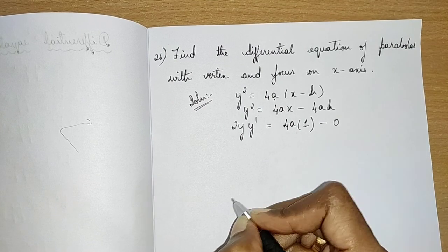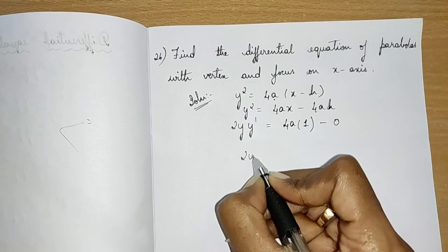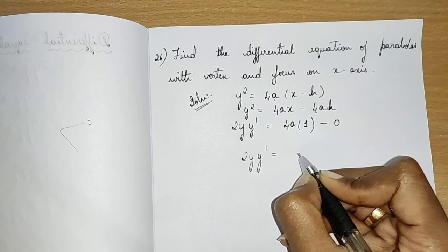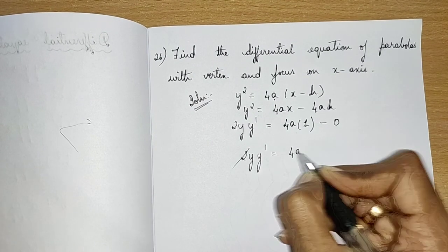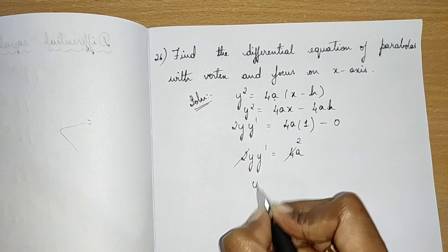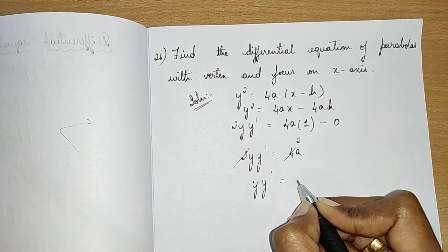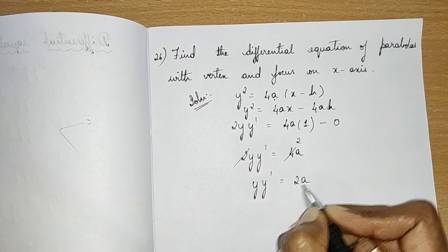So differentiation of a constant is 0. We have 2y·y' = 4a, and simplifying, yy' = 2a.